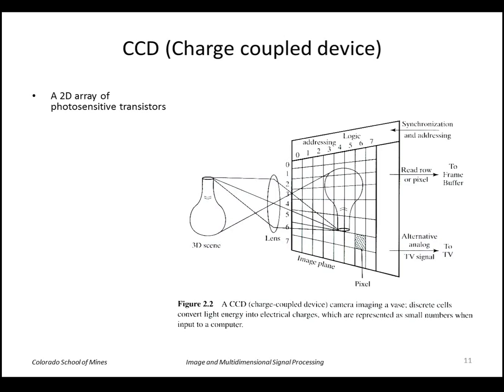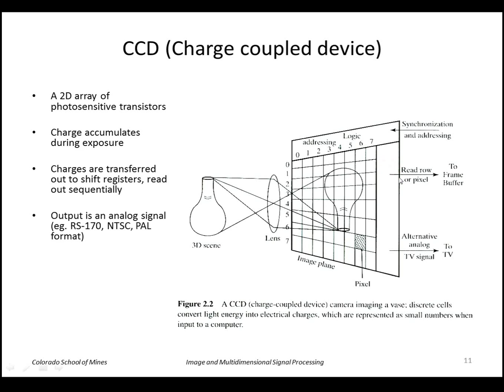A common type of camera is the CCD, or charge-coupled device, which is a two-dimensional array of photosensitive transistors. Each transistor accumulates charge proportional to the amount of light hitting it. Once the integration time is stopped, the charges are transferred out and read sequentially — across or down from one to the other.